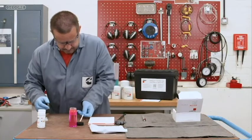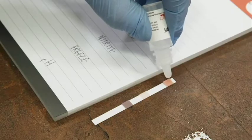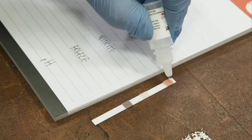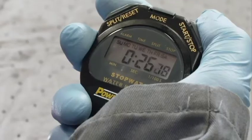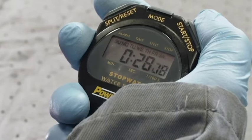Place the strip on a non-porous surface with the test pads facing up. Add one drop of dilute acid reagent to the molybdate pad before quickly starting your timer and allowing 45 seconds to pass before checking the results.